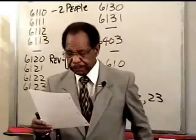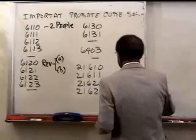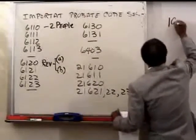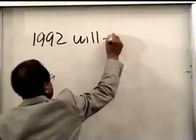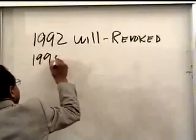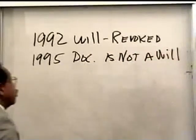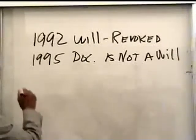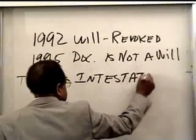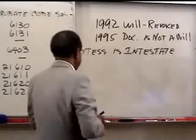The 1992 will has been revoked, and the 1995 document is not a will. Therefore, the testator is now intestate — meaning they don't have a valid will. If the testator is intestate, then how will the property go? The property will go intestate: one half to Donna and one half to Sam, because those are her children.